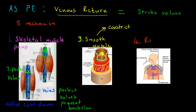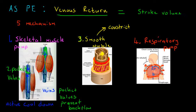The fourth mechanism is the respiratory pump. The thoracic cavity — the chest cavity containing the lungs — expands when we breathe in and reflexes back when we breathe out. This creates continual pressure changes within the thoracic cavity, which actually squeezes blood back toward the heart. During exercise, the chest cavity moves at a rapid pace, and those pressure changes help pump blood through the chest itself back to the heart.